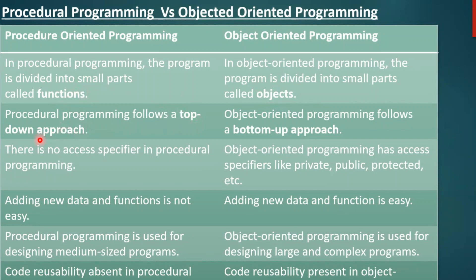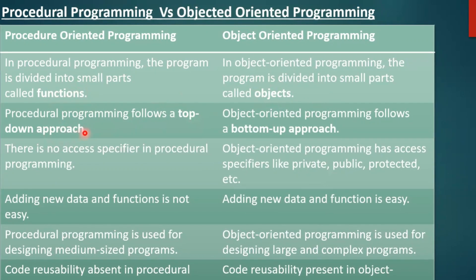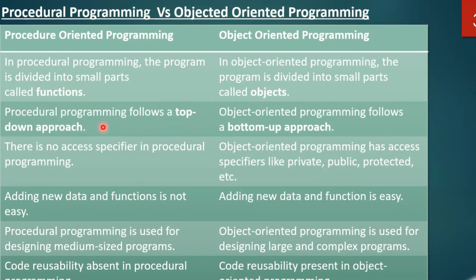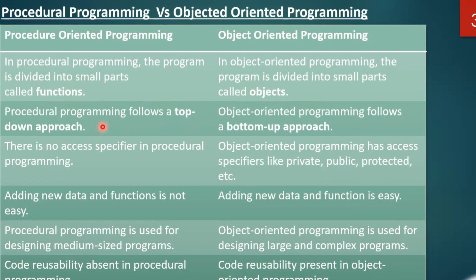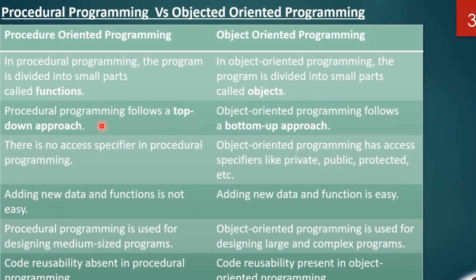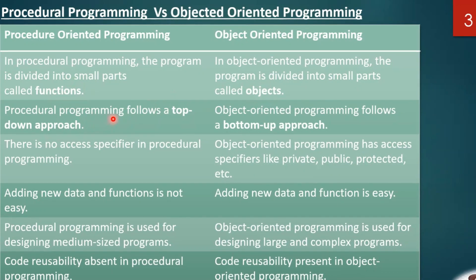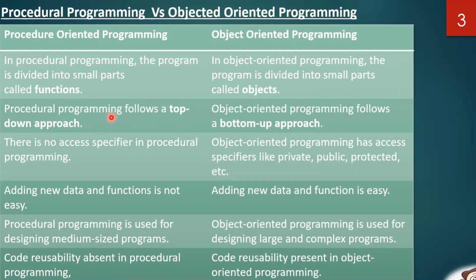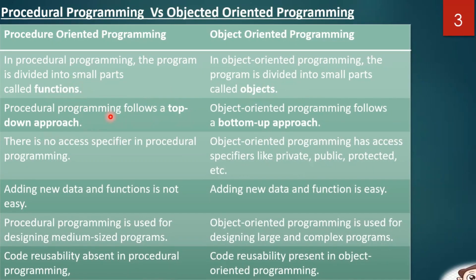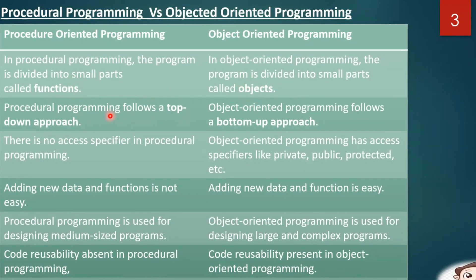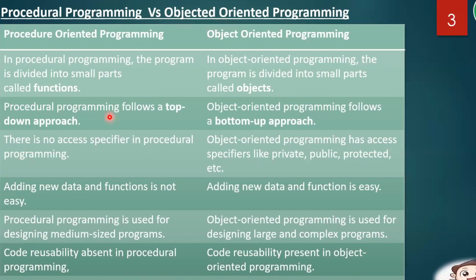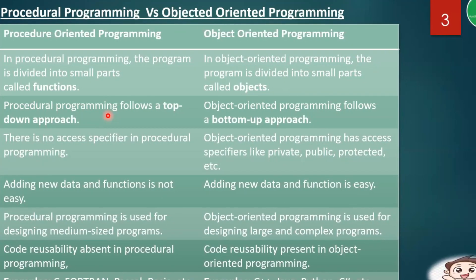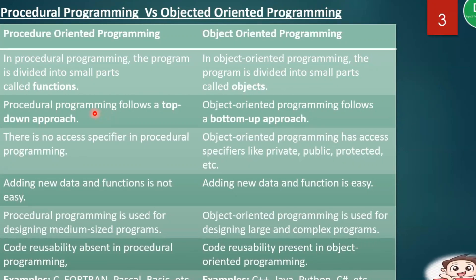Procedural programming follows a top-down approach. Suppose I want to perform some action — I have to write the code in a top-down manner. For example, if I want to add two numbers, I will create one function or procedure. Before calling it, the function must be declared. If I call a function before defining it, it will give an error. So that is the top-down approach.